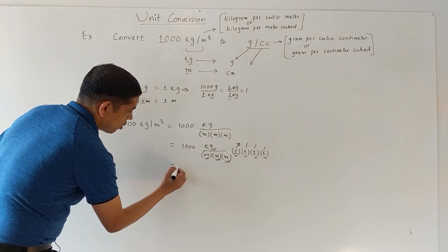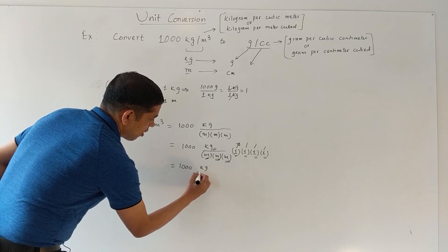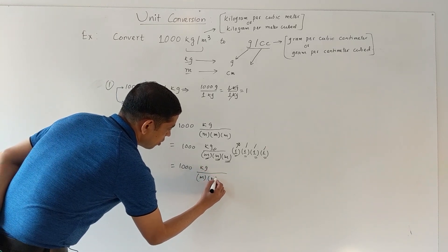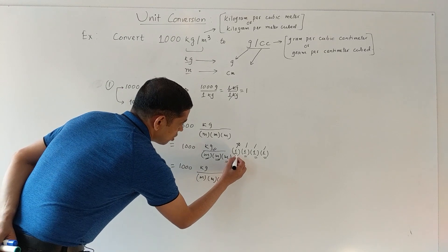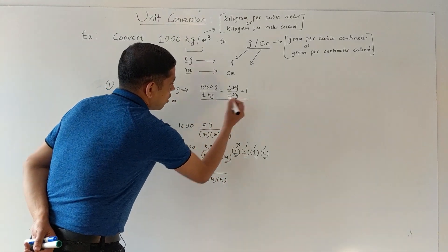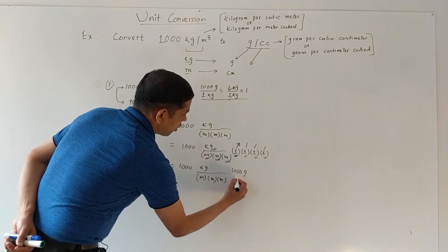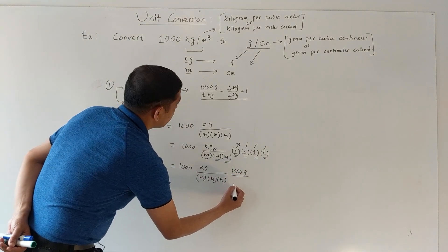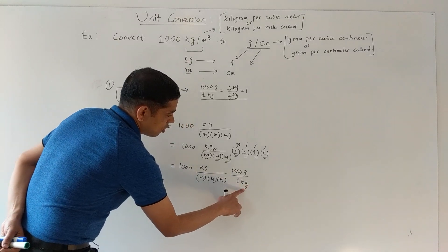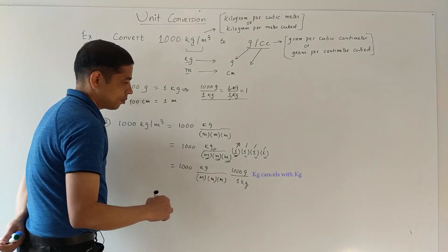Let's rewrite this: 1000 kilogram over meter, meter, meter — and this one is replaced by 1000 gram divided by one kilogram. See that this kilogram cancels with the kilogram on top, leaving us with grams.